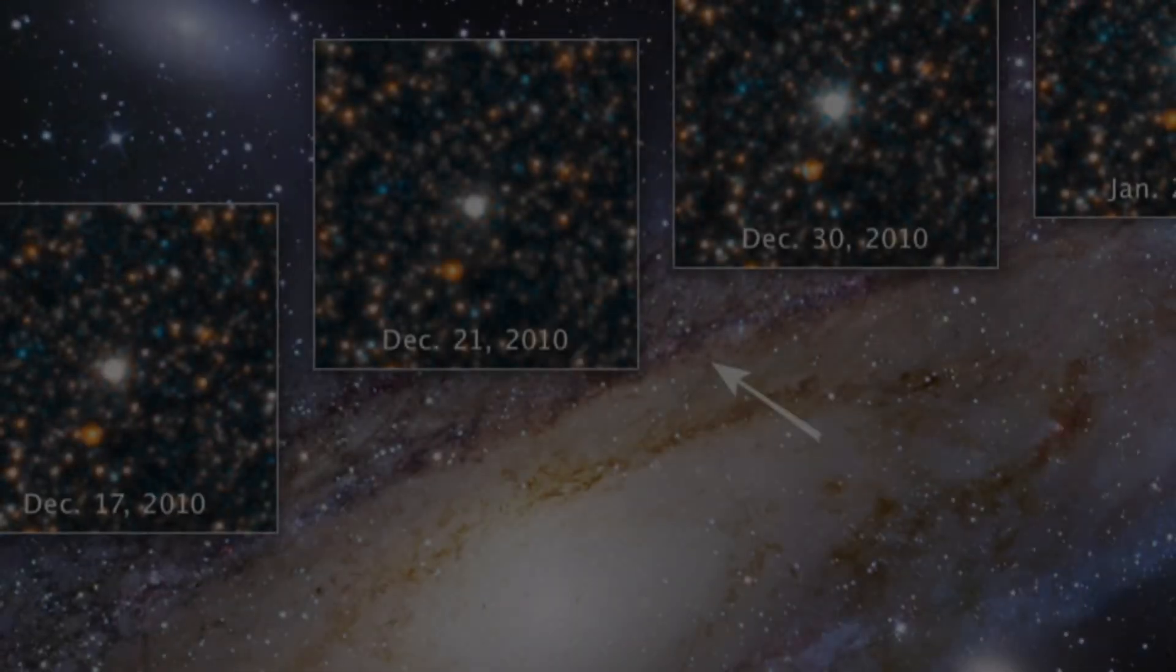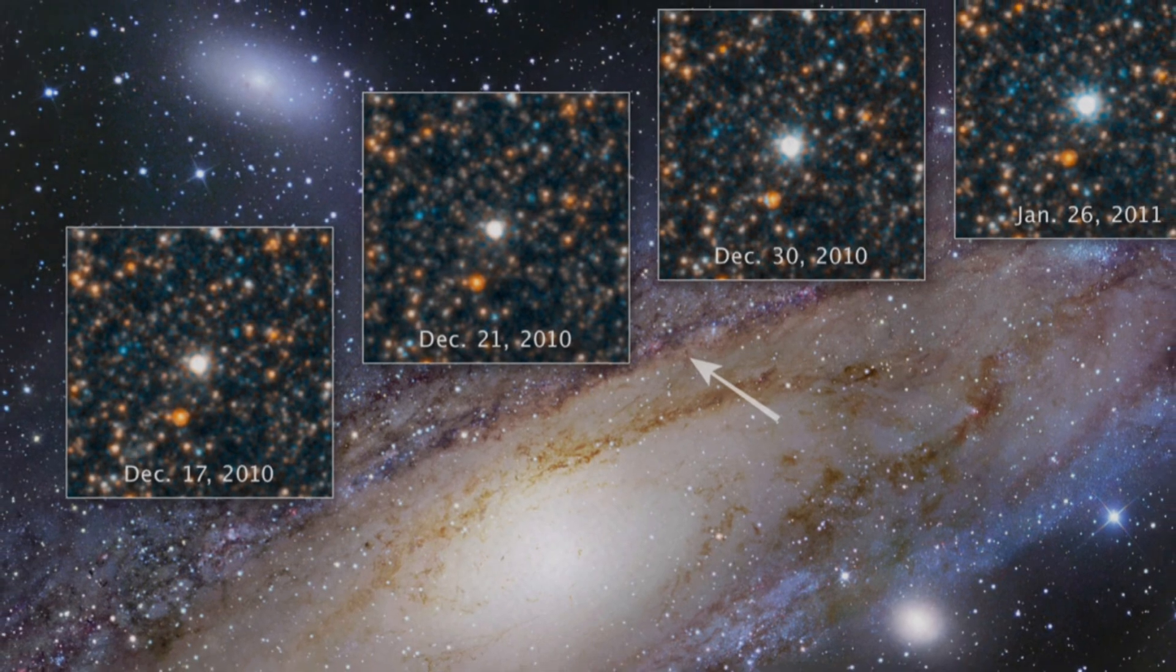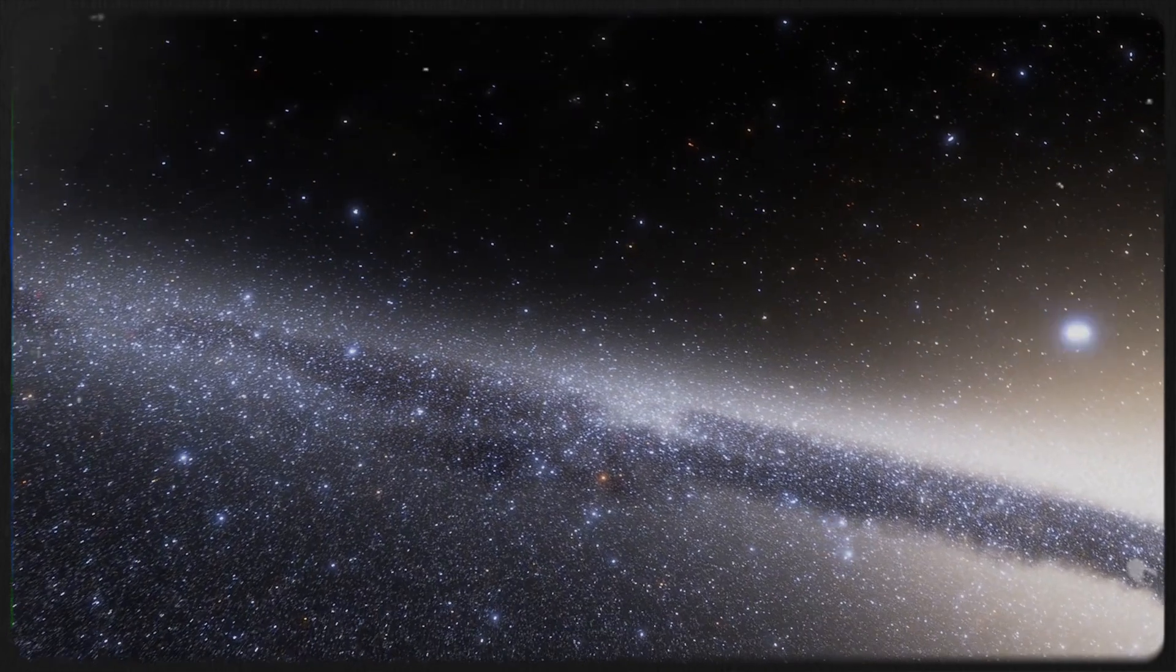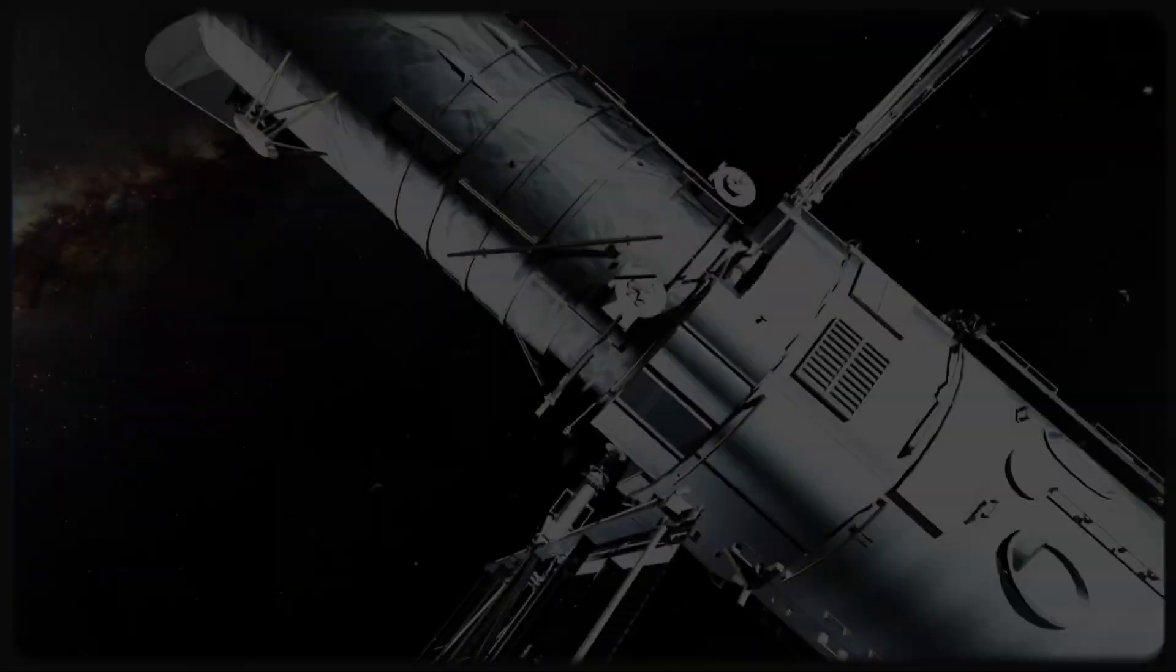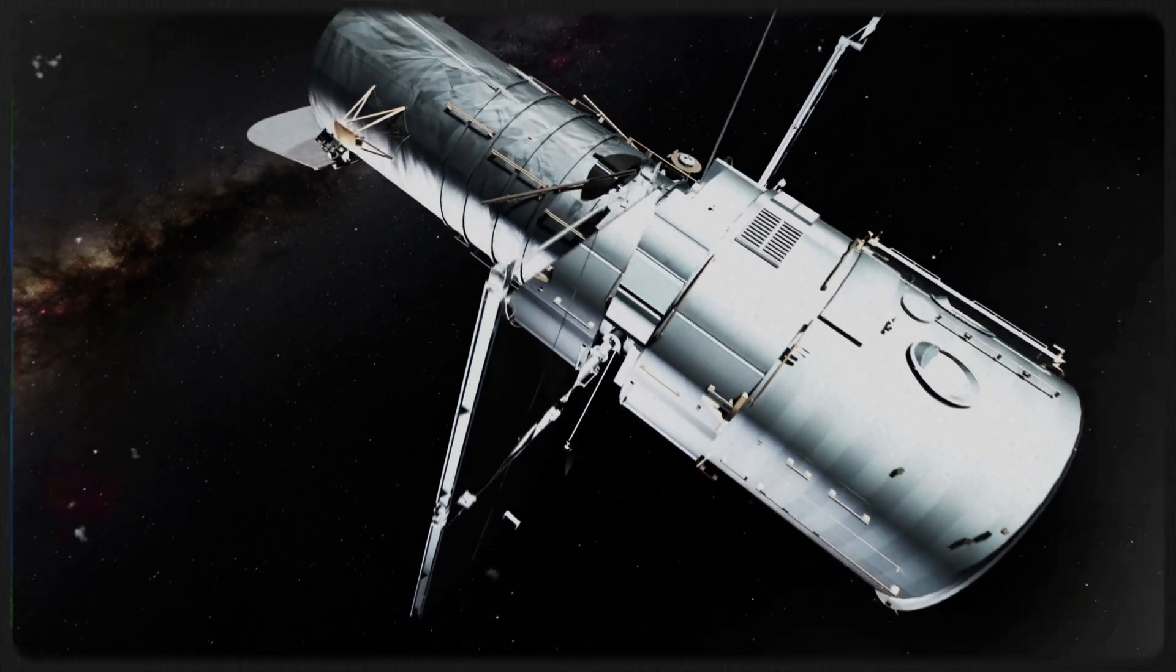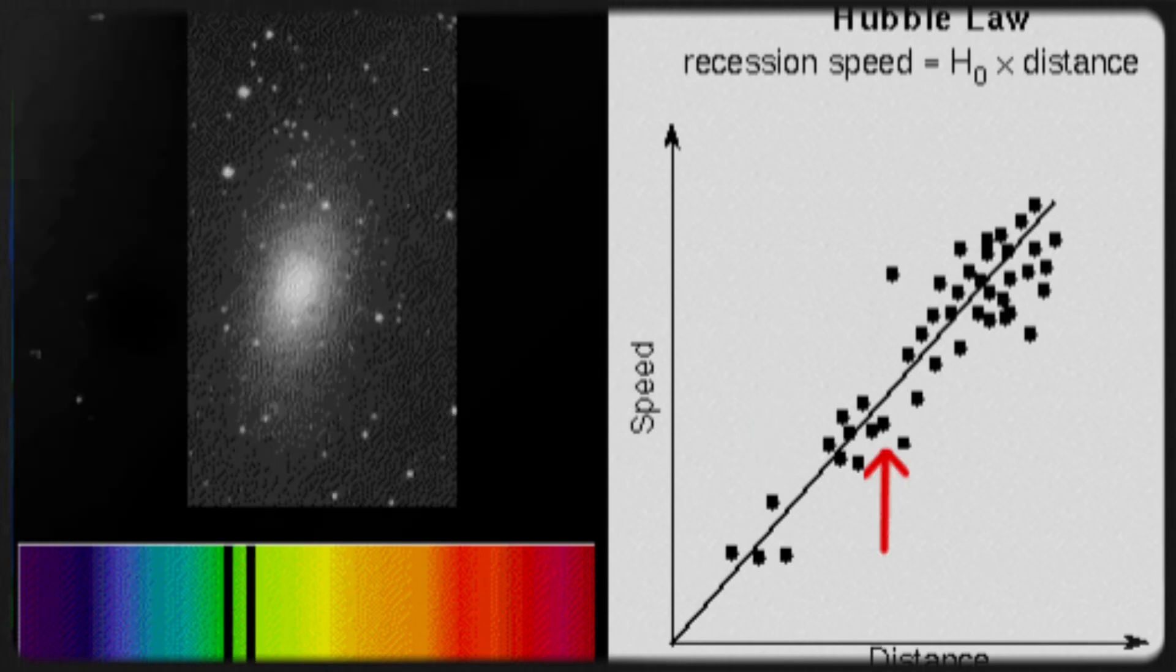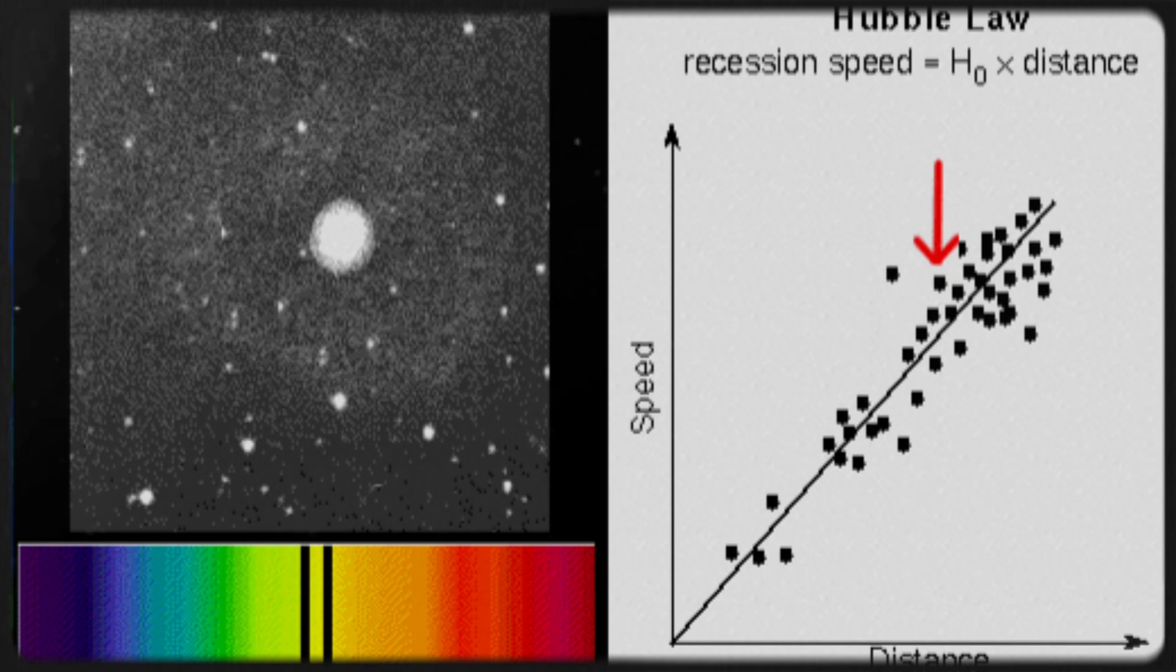That means the space between galaxies is literally stretching, like dots on the surface of an inflating balloon. Hubble also proposed something key: this expansion should be happening uniformly, no matter which direction you look. But here's where things get messy. When scientists tried to measure the rate of that expansion using different methods, they kept getting different results. These mismatched measurements became known as the Hubble tension, and for years, many thought the issue was just due to measurement errors or data quirks.